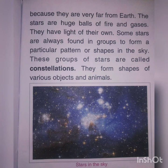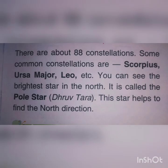These constellations form various shapes. There are about 88 constellations. Some common constellation names are Scorpius, Ursa Major, Leo, etc.